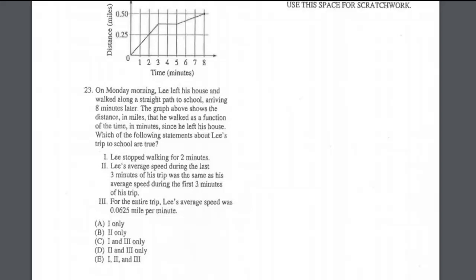Question number 23: on Monday morning, Lee left his house and walked the longest straight path to school, arriving eight minutes later. The graph shows the distance in miles he walked as a function of time in minutes since he left his house. Which statement about Lee's trip is true? Lee stopped walking for two minutes — from the third minute to the fifth minute — as shown by the constant, flat portion of the graph. The other statements are wrong, so the suitable answer is A.